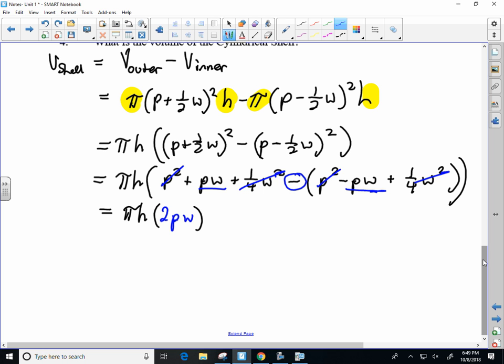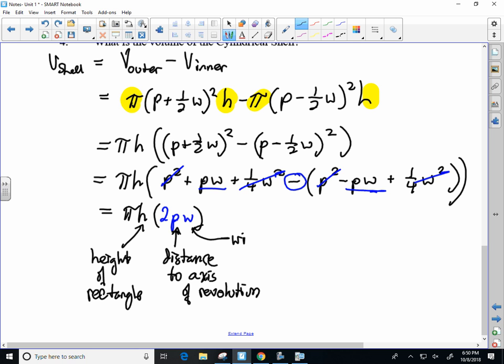So if you think back to the rectangle, we had three pieces of information that we either would have or would need to figure out. One would be the length of distance, the distance to the axis of revolution. H would be the height of your rectangle, and W would be the width of the rectangle.